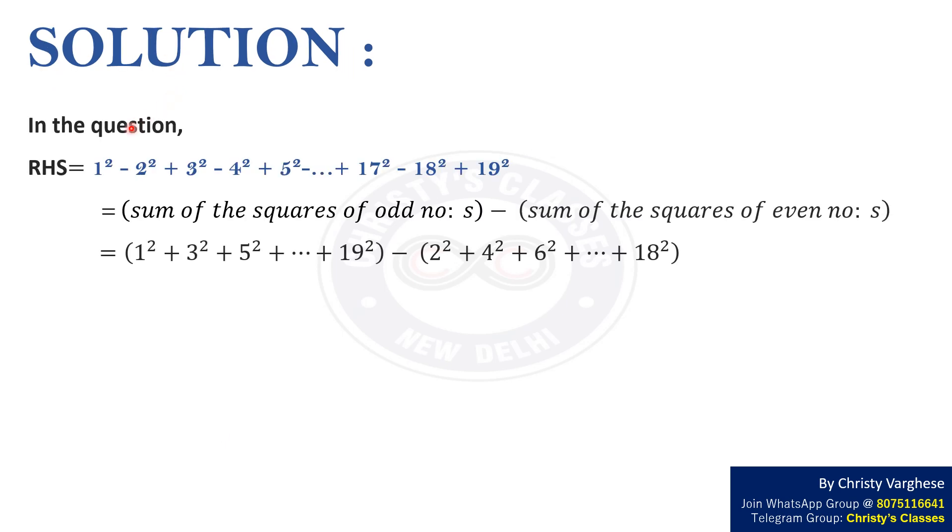Solution. In the question RHS equals 1 square minus 2 square plus 3 square minus 4 square and so on, continuing into 17 square minus 18 square plus 19 square.